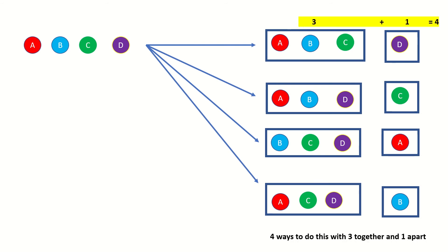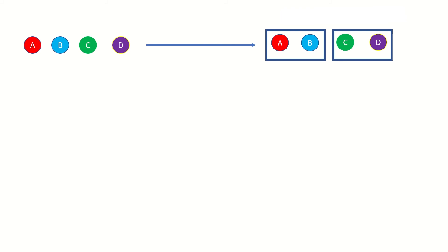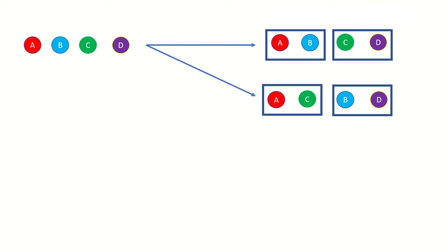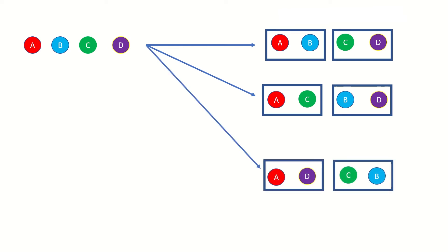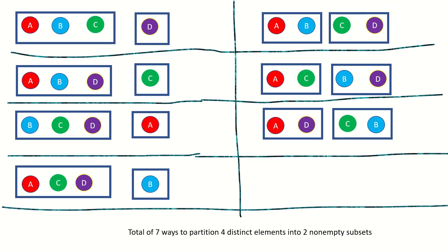We could also place a, b together in one subset and c, d in the second subset; or a, c in one subset and b, d in another; or a, d in one subset and b, c in the other. Since we do not allow for empty subsets, these are all seven ways of partitioning a set of four elements into two non-empty subsets.